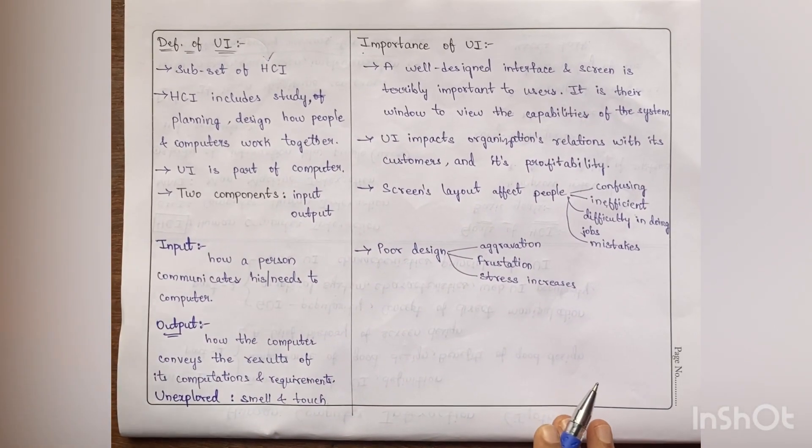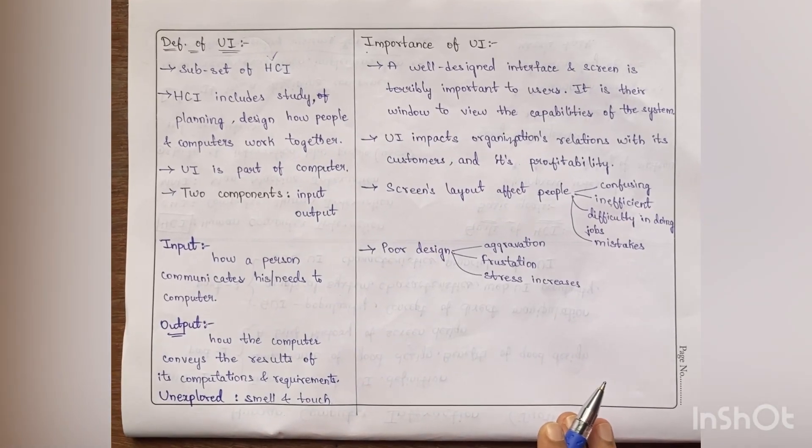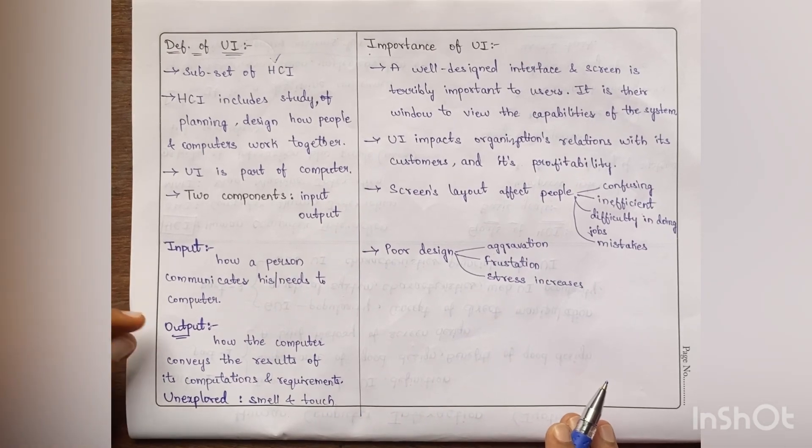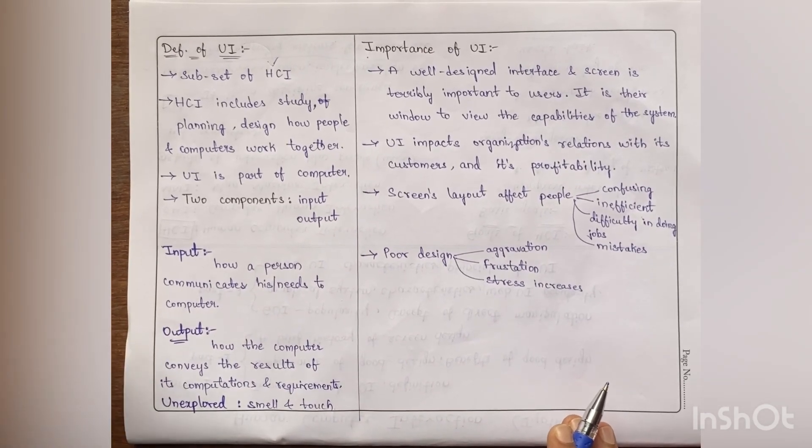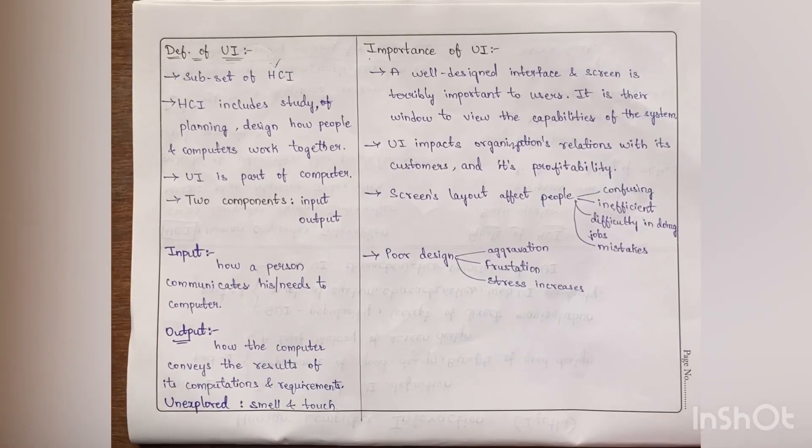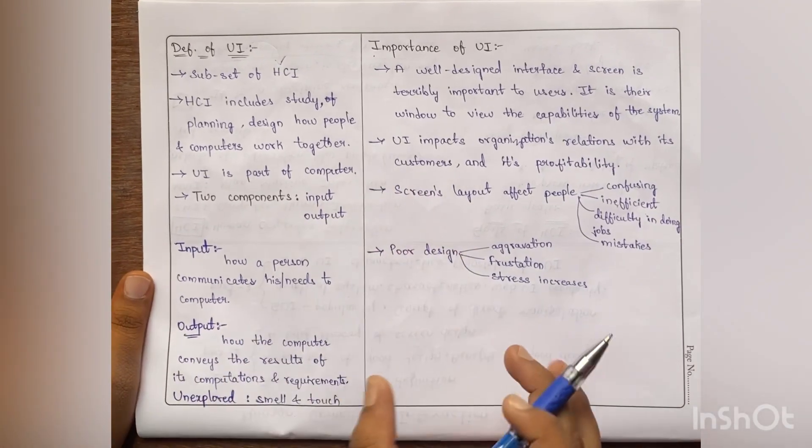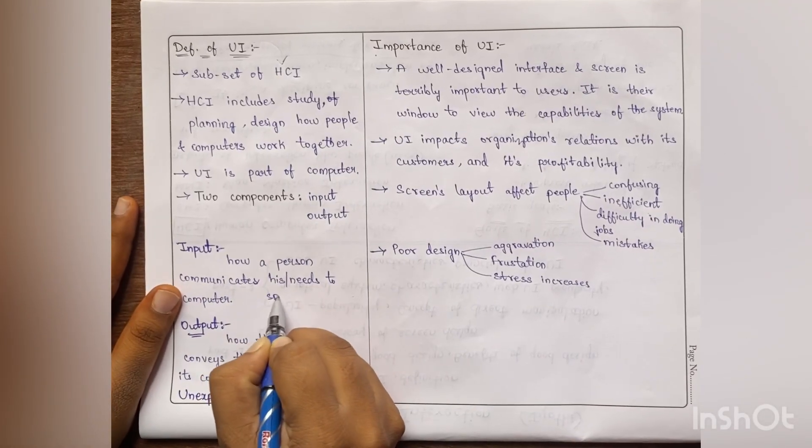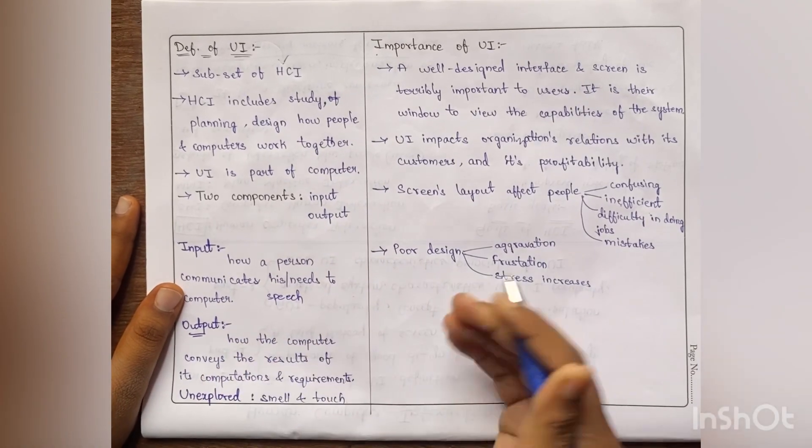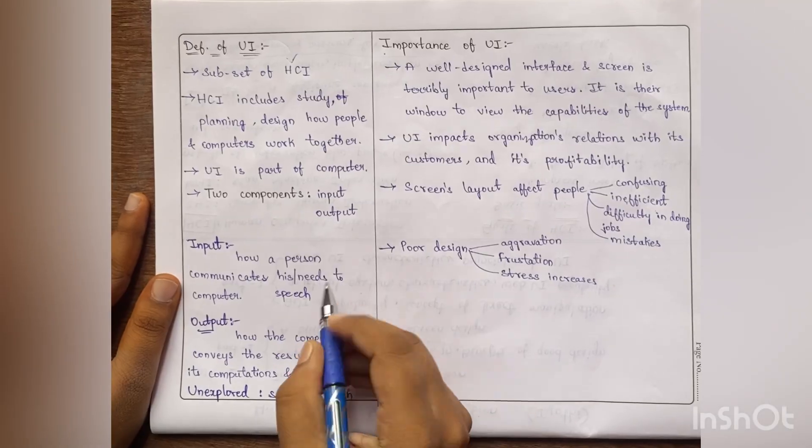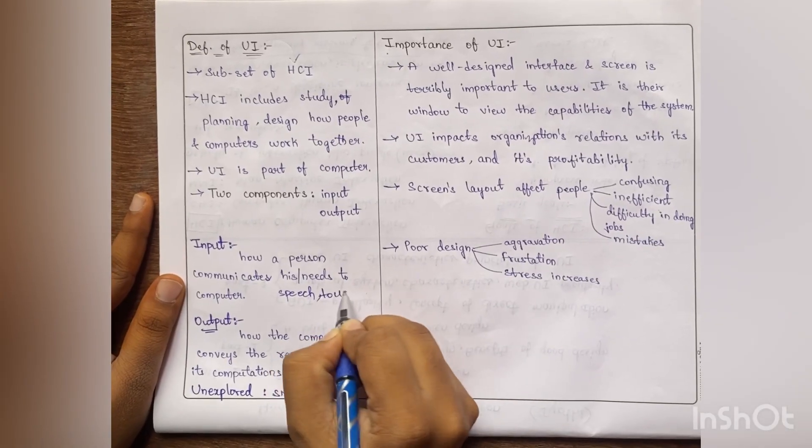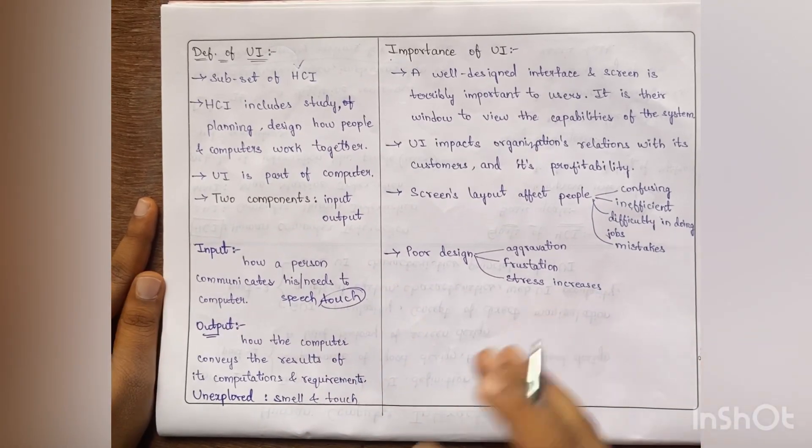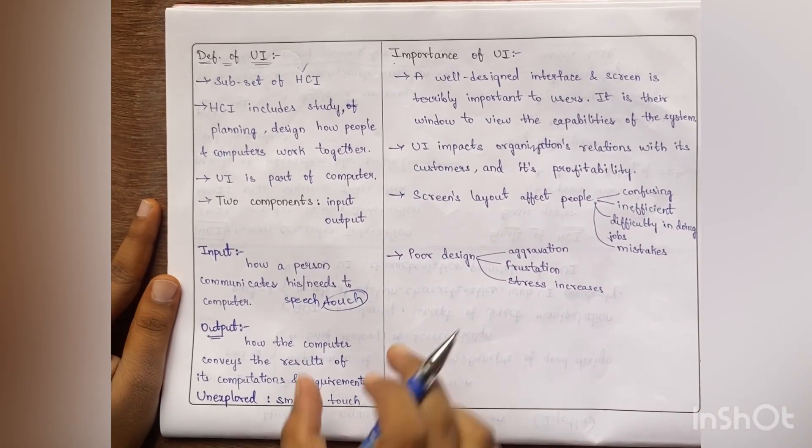And coming to output, now computer giving its results, all its computations, whatever the people is required. All these results coming back to the user are output components. Output is like the most common one is the screen, the monitor screen. In this user interface, few things are unexplored. In the input part, speech is one part which it is able to recognize, and sensors that is also one part. Touch, all these things. But this touch part and the smell part are still unexplored. There are still researchers going on these two areas.